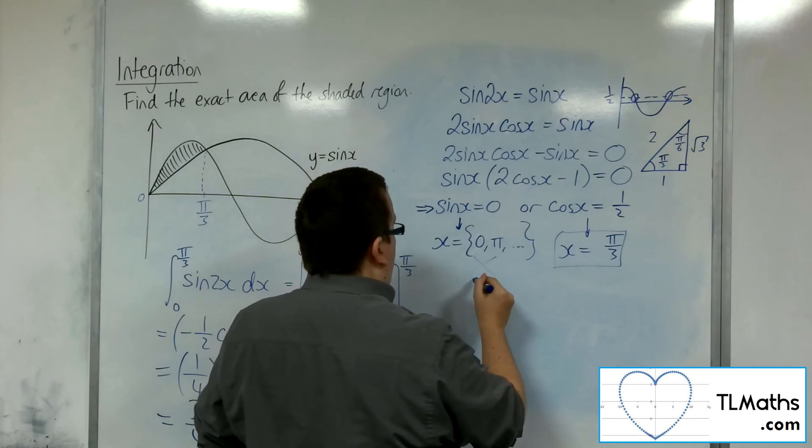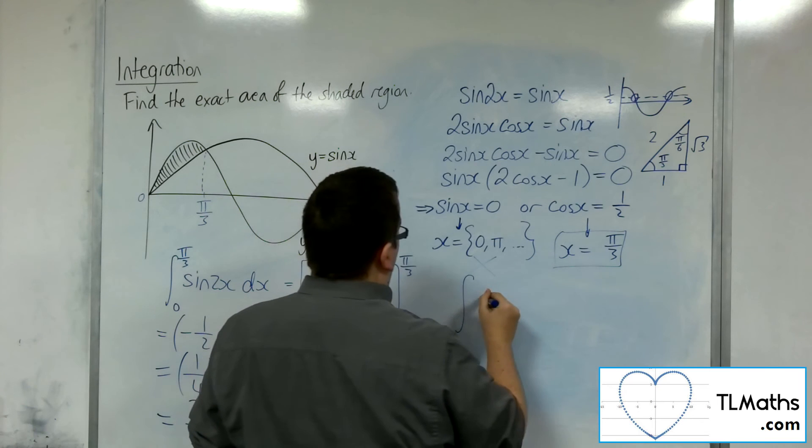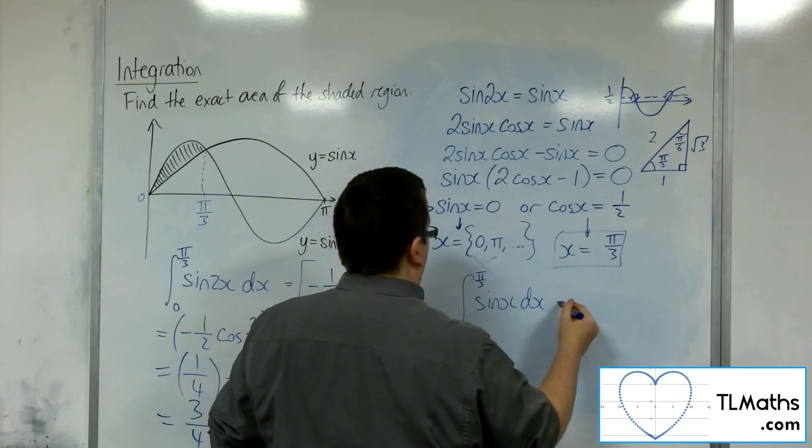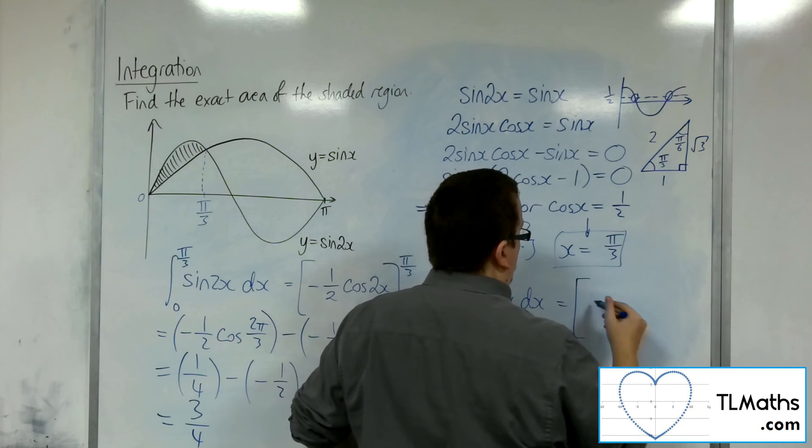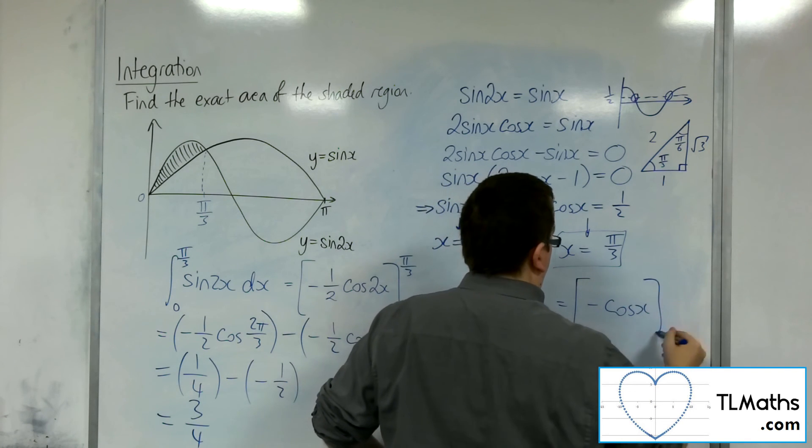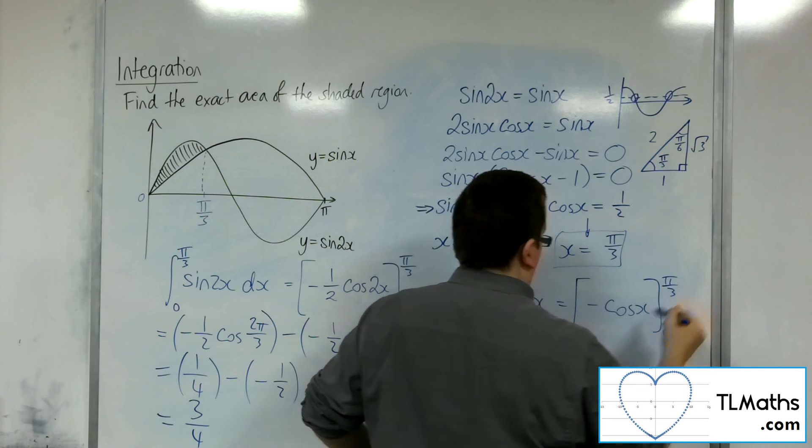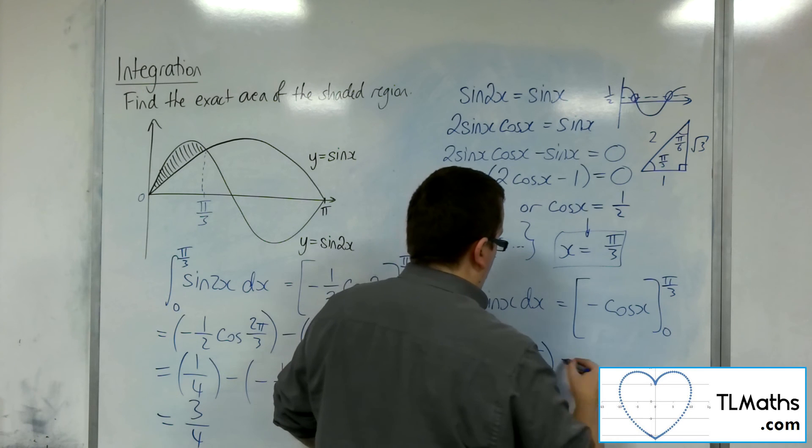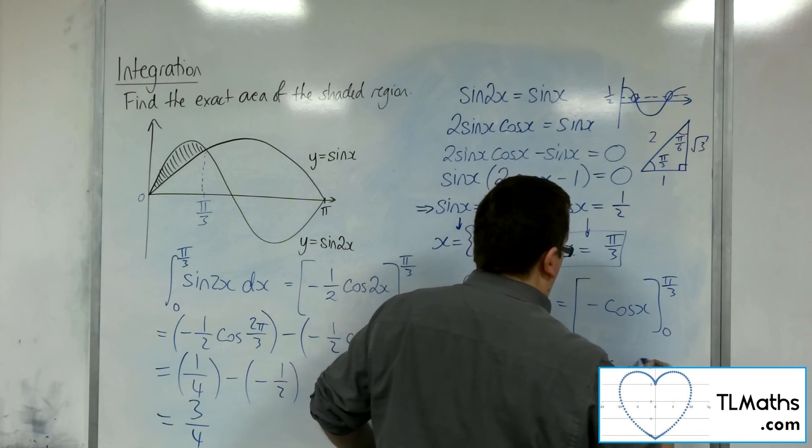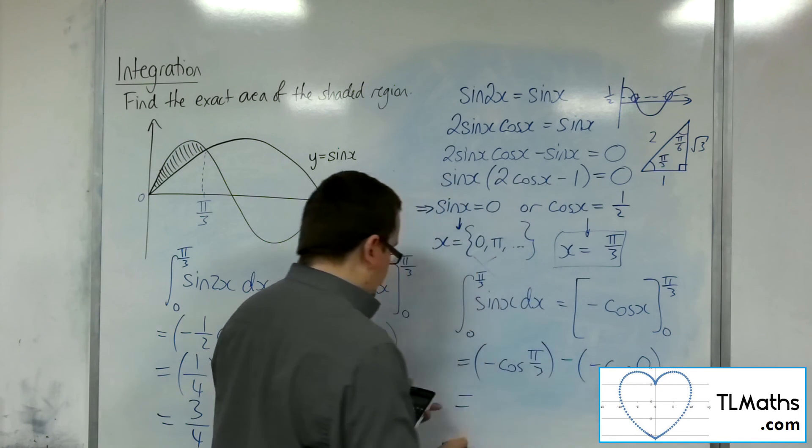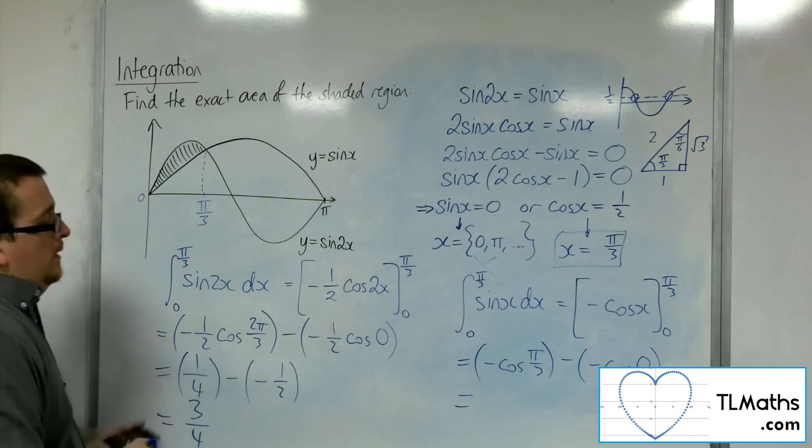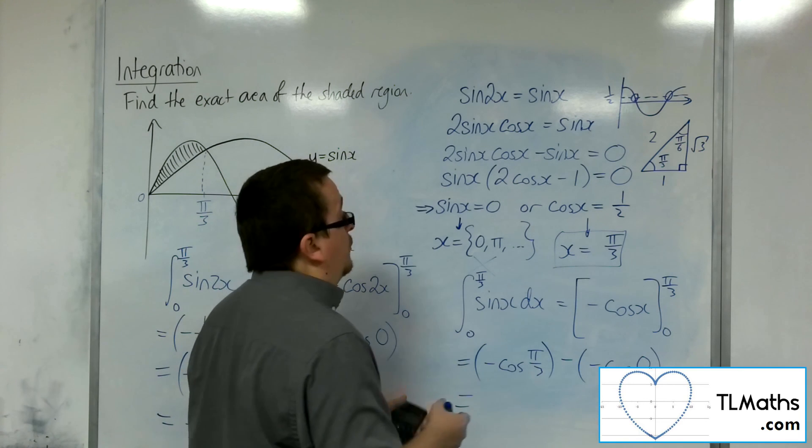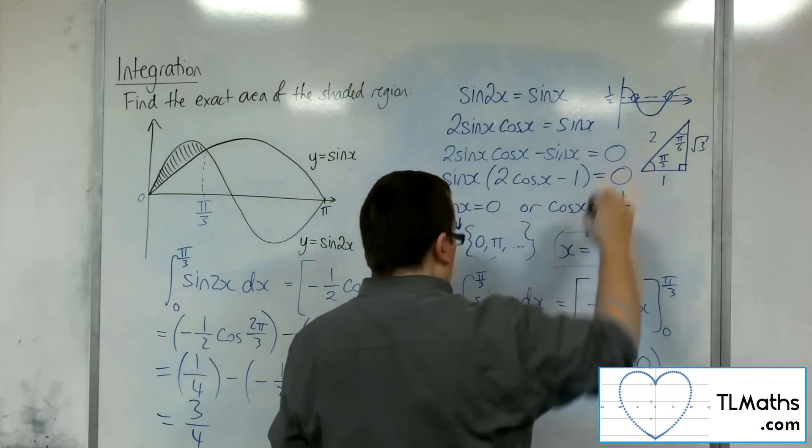OK. So now I need to find the integral of sine x dx evaluated between 0 and pi over 3. So sine integrates to minus cosine. So we've got minus cosine of pi over 3. Take away minus cosine of 0. Now, negative cosine of pi over 3 is, of course, minus 1 half, adjacent over hypotenuse there.